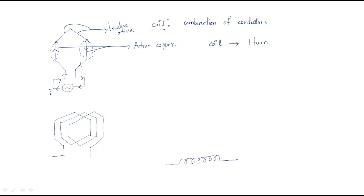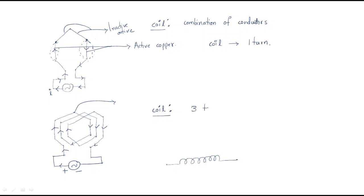Here is another example of a coil. The supply flows through the coil and comes back — that is called one turn. Then the coil enters again for a second turn, and again for a third turn. This coil consists of three turns.